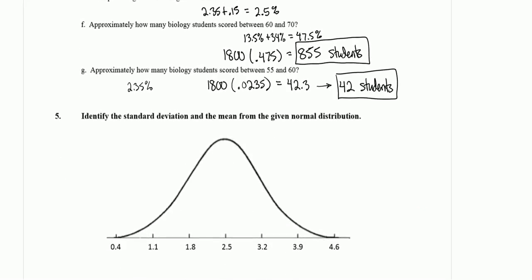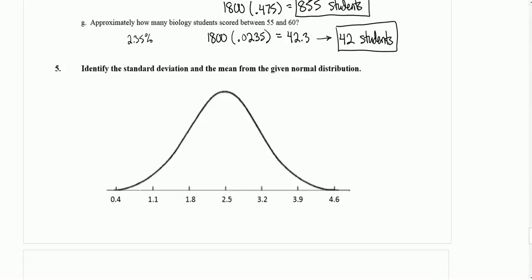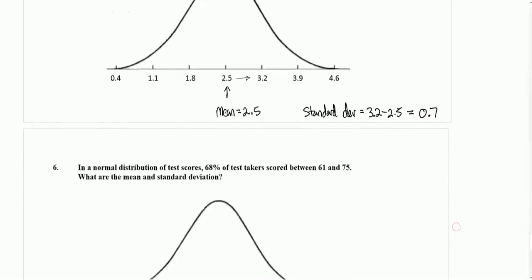Number 5 asks us to identify the standard deviation and mean from the given normal distribution. The mean is the middle of that distribution. This is symmetric, and so we see that the mean is 2.5. These are marked off. We're making an assumption here that they've marked off one standard deviation to the right is 3.2. So what's the distance from the mean to 3.2? The standard deviation is 3.2 minus 2.5 to find that distance, and we get 0.7.